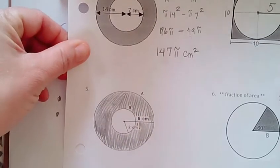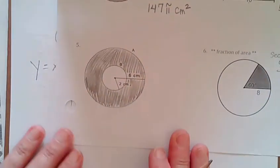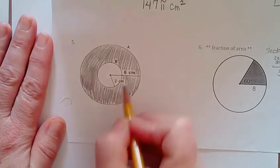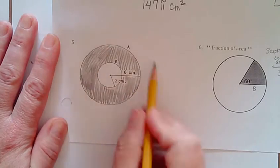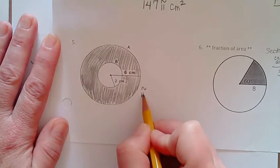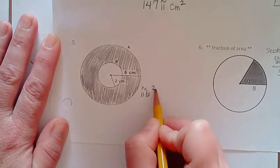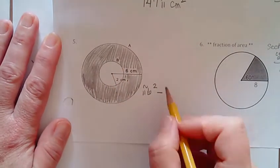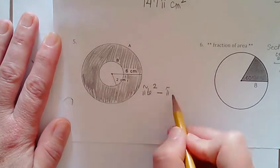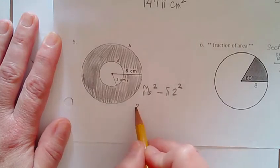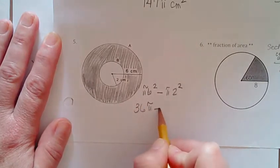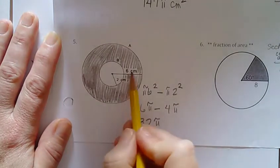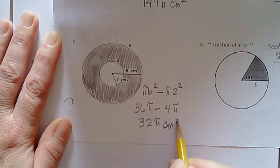Number 5. So we come down to this guy over here. Big circle minus little circle, just like this one. My big circle is pi 6 squared minus, subtract out the little unshaded circle, and that's pi times radius, which is 2 squared. That's 36 pi minus 4 pi, and that's 32 pi. Go back for my units, centimeters squared.